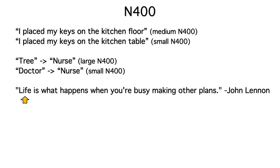For example, in this famous quote from John Lennon, the first word is completely unpredictable and would generate a large N-400. The next word, 'is,' is a little more predictable and would generate a smaller N-400. By the time you've read 'life is what happens,' 'when' is pretty predictable and would generate a smallish N-400. And by the time you get to the end of the sentence, 'plans' is highly predictable and would generate very little N-400.